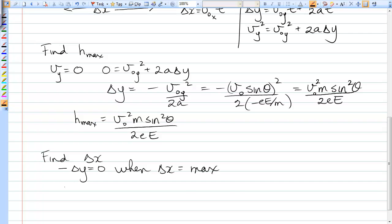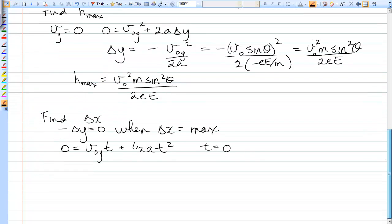And so, using the second equation in our Y column, we have that zero is V0Y t plus one half AT squared. There are actually two solutions. One solution is that T equals zero, and that's just where it starts. But the other solution, if you cancel the T, is when one half A times T is negative V0Y, or negative V0 sin theta.